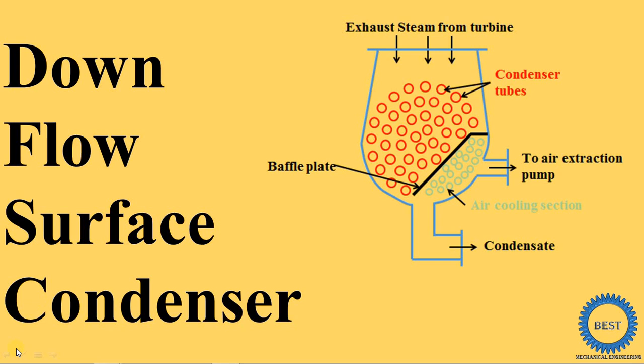Surface condenser means steam coming out from the turbine and the cooling water supplied in the condensers are not directly mixed. Between the steam and the cooling water some mediums are there, and these mediums are the tubes.